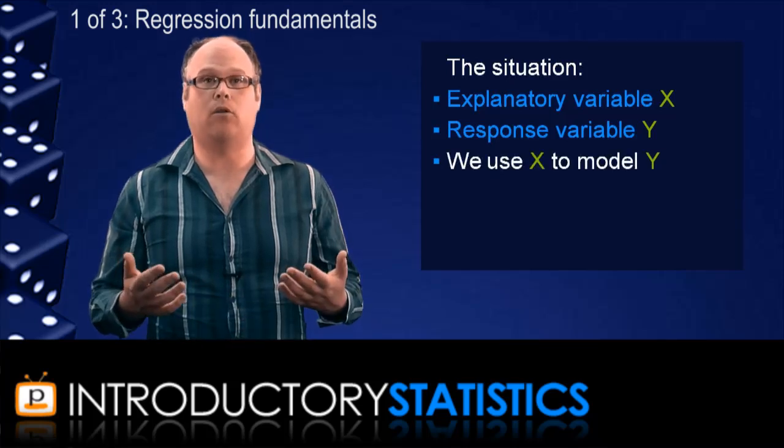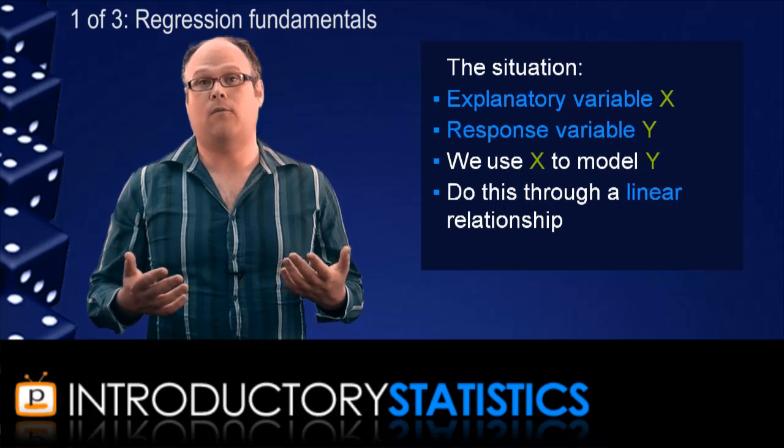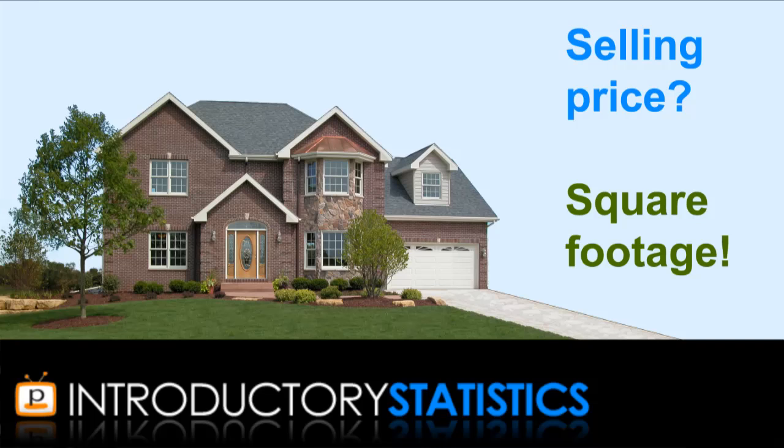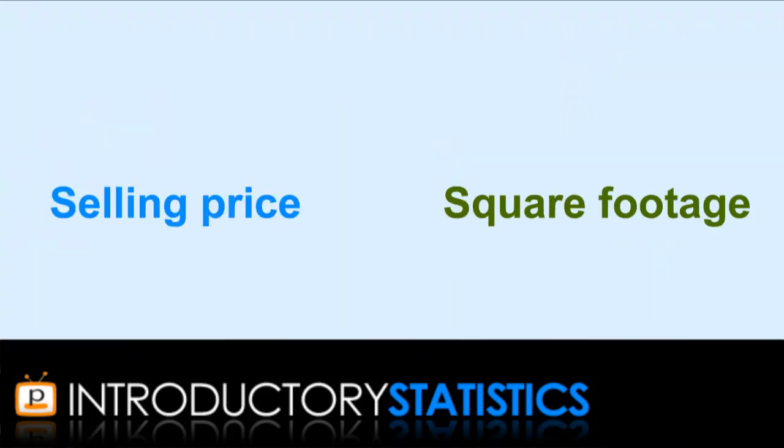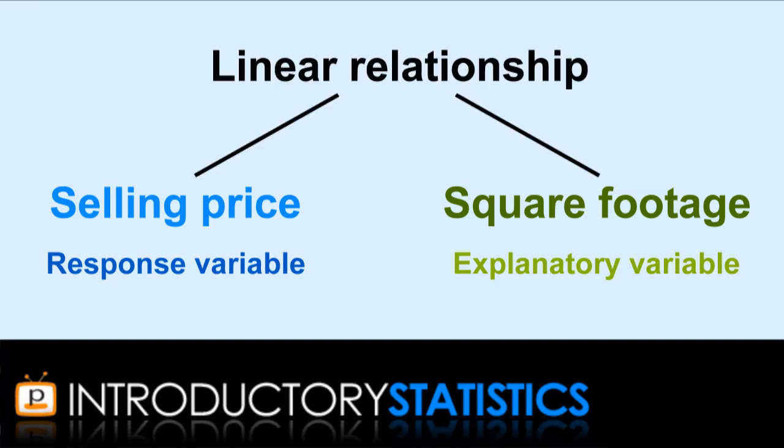And we'll assume that the model is based on a linear relationship. For example, we might want to model how much a house will be sold for on the market based on the number of square feet in the house. So the square footage of the house is the explanatory variable, and the house market price is the response variable. And we are assuming that we can effectively model one on the other with a linear relationship.